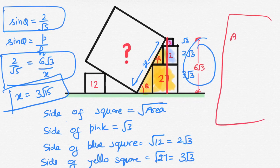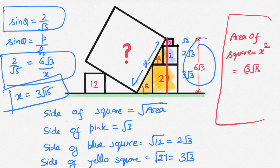So, area of this toppled square will be x square. And x is 3 root 15. Now, taking square, this equals to 135.